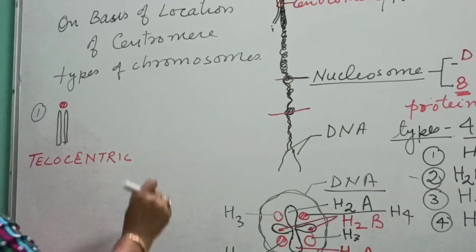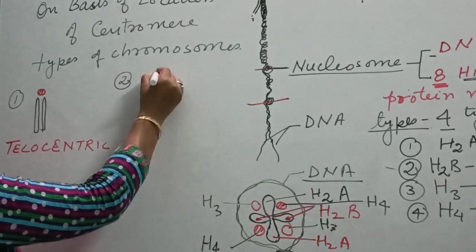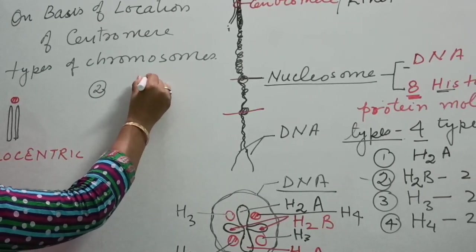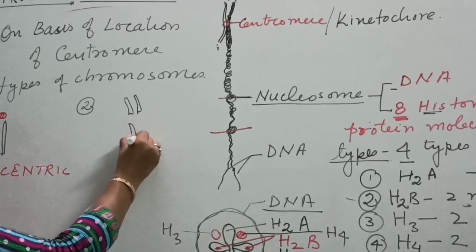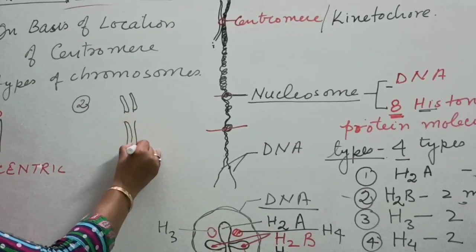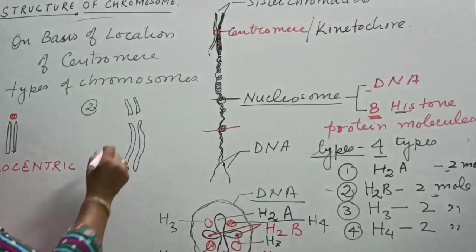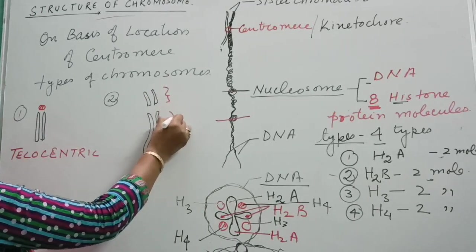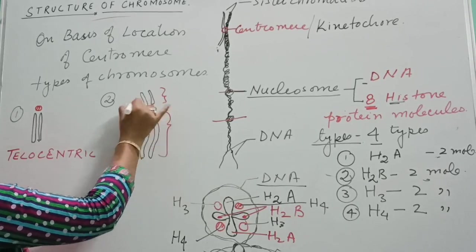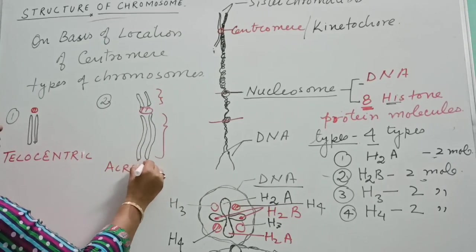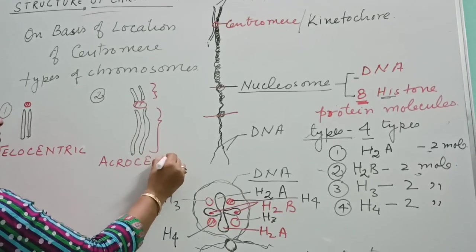Second one, when one arm is very small and the second is too much longer with respect to this one, you can see the difference in the size, and the centromere is present over here, it is termed as acrocentric.